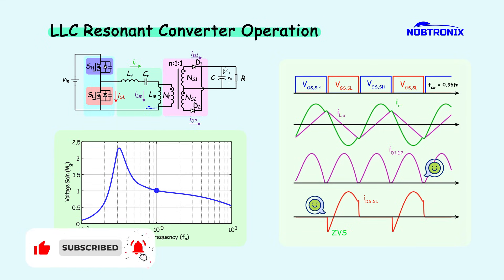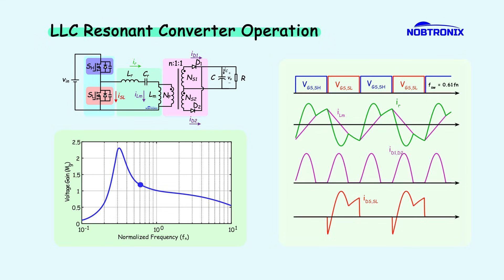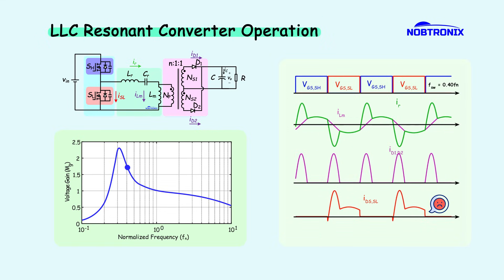Moving away from resonance, it can be observed that the conduction time of the diodes decreases, which increases the RMS current values. At the peak voltage point, soft switching of the MOSFETs starts to degrade. And beyond this point, the MOSFET current becomes negative during turn-off, causing the body diode to conduct.